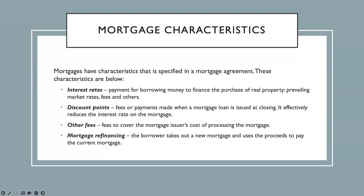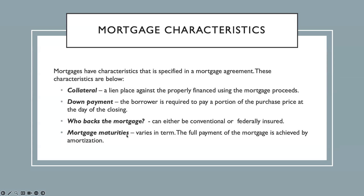Lastly, we have adjustable-rate mortgages. As the name suggests, the interest rates on these mortgages are adjusted because they are tied to a market interest rate index. So if the prevailing interest rate moves, the rate on your mortgage will also move. Therefore, the payments on these types of mortgages can change over the life of the loan.